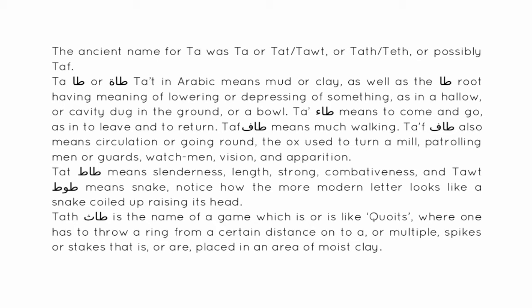Ta' alif, or Ta' alif ta' marboota, in Arabic means mud or clay. The Ta' alif ta' root also carries the meaning of lowering or depressing of something, as in a hollow or cavity dug in the ground, or a bowl. Ta' means to come and go, as in to leave and to return. Ta'af means much walking and also means circulation or going around, as in the ox used to turn a mill.